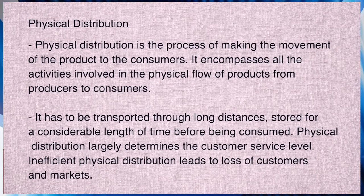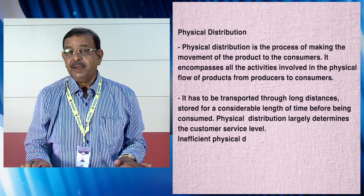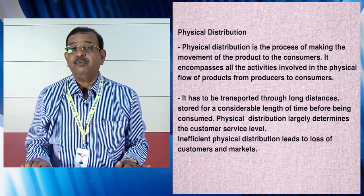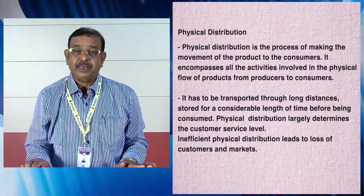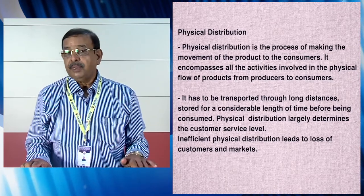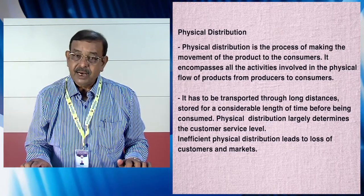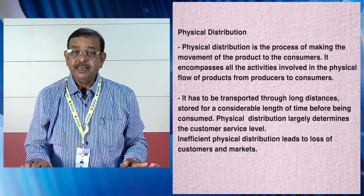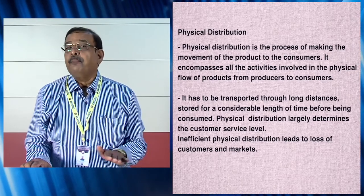Physical distribution is the process of making the movement of product to the consumers. It basically implies the flow of physical processes and encompasses all activities involved in the physical flow of products from producers to consumers. Producers produce the finished goods, store them in a finished goods warehouse, then it goes to distributors, then to dealers, then to sub-dealers, then to wholesalers, then to retailers, and from the retailers the consumers ultimately purchase the products.